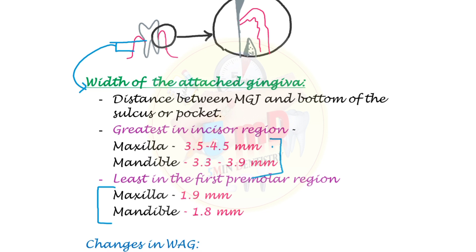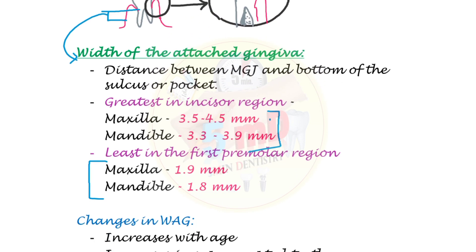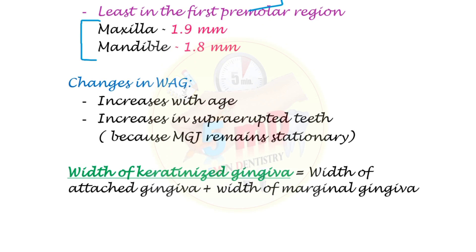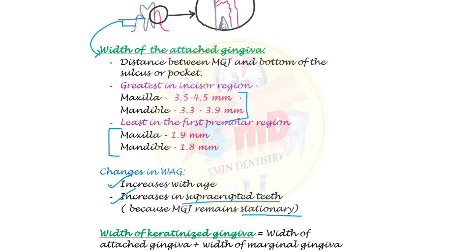These values and the definition of width of attached gingiva are important from a viva point of view. Physiological changes include: the width increases with age, and increases in supra-erupted teeth. This is because the mucogingival junction remains stationary throughout life; therefore, the width of attached gingiva changes with the position of the coronal aspect of the gingiva.